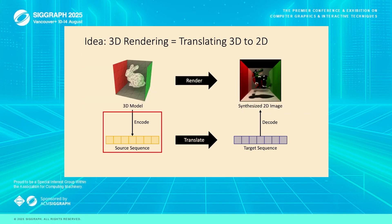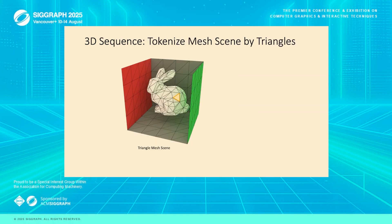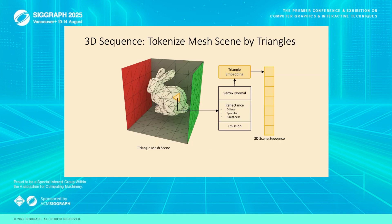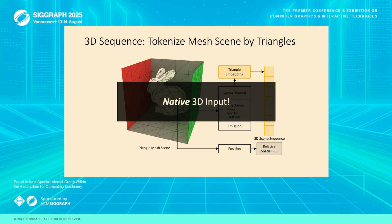Let's start with how we encode the 3D scene. First, we treat every triangle in the scene as a single token. We then encode that triangle's key properties into the token's embedding — this includes its vertex normals, material reflectance, and any emitted light. Next, we embed the triangle's position using a relative spatial encoding method derived from RoPE. By mapping each triangle to a single token, we preserve all the native 3D information of the scene right from the very start.